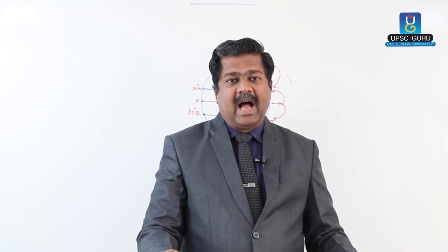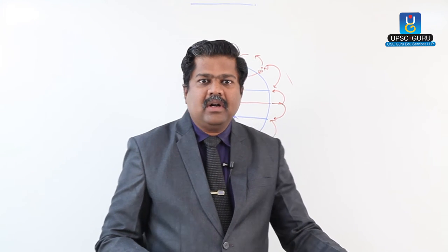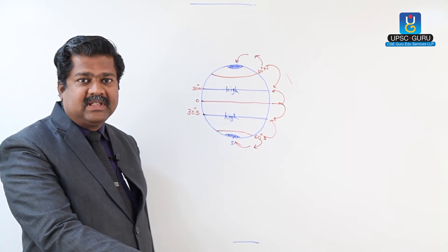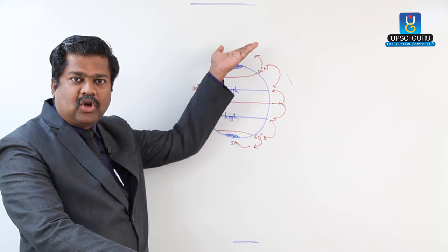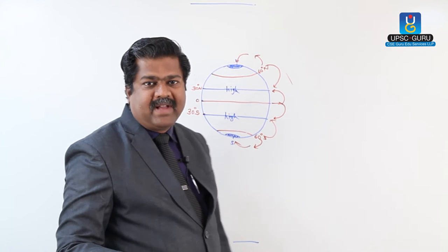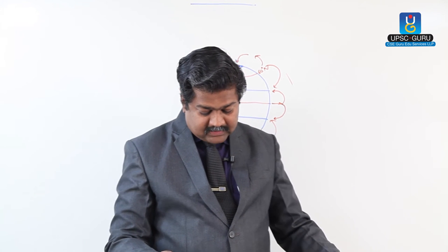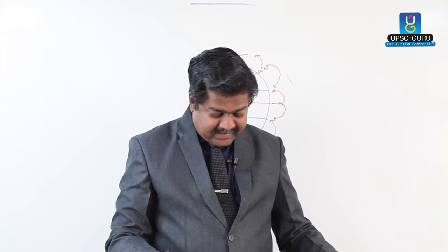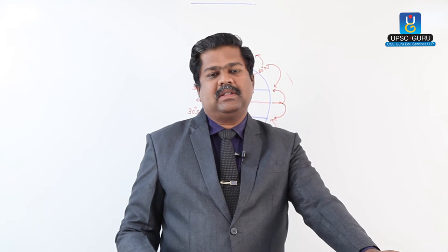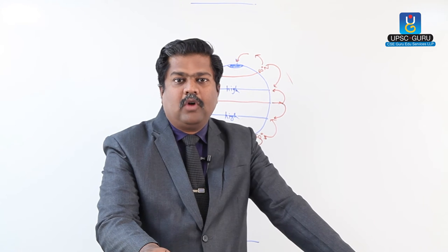The pressure belts are swinging in nature — they move up and down. When the apparent motion of the sun is towards the northern hemisphere, that means in summer season, the pressure belts also tend to move towards the north side. This is called a swing, or seasonal migration of pressure belts. Now we have to discuss the global pattern of isobars — this is just the theoretical part.